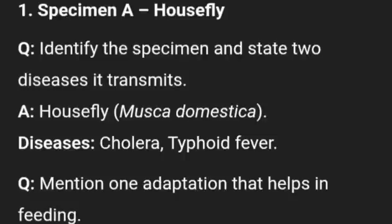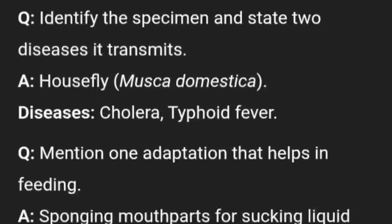The first specimen, specimen A, is housefly. The first thing is to identify the specimen and state the disease it transmits. Housefly — note the botanical name. Two diseases it transmits are cholera and typhoid fever. One adaptation that helps in feeding: it has sponging mouthparts for sucking liquid food.